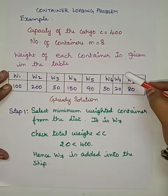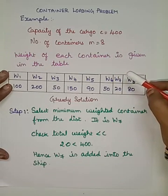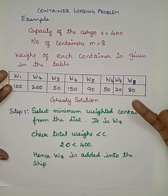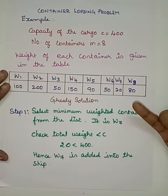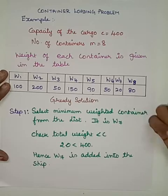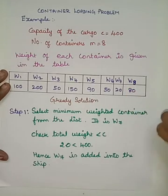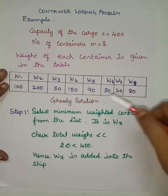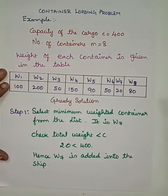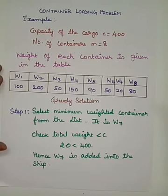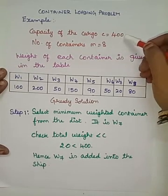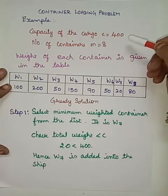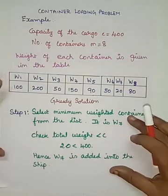The two constraints we saw in the previous video are: first, you must load as many containers as possible, so the number of containers must be maximized. Second, the cumulative weight of all containers loaded must not exceed the capacity of the ship or cargo. Based on these two constraints, we are going to solve this problem.